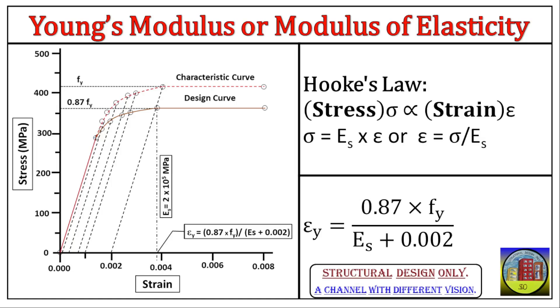This concept of the proportional limit is closely tied to Hooke's law, a fundamental principle in material science. Hooke's law tells us that stress and strain are proportional. In simpler terms, the more you stretch or compress a material within this elastic limit, the more it resists that force.